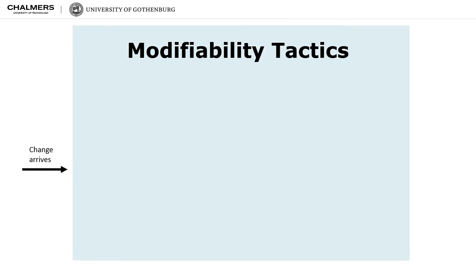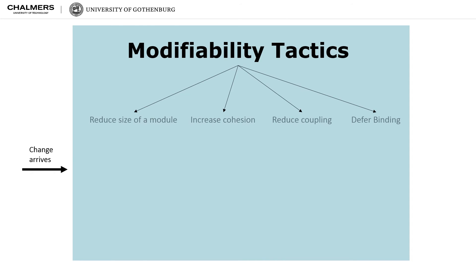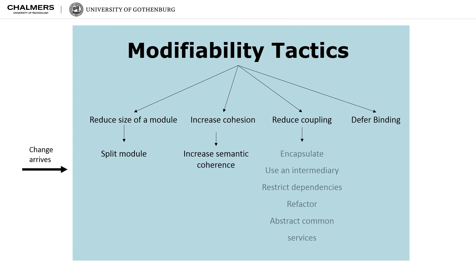In order to make an architecture more modifiable, an architect is equipped with a rich set of modifiability tactics to select from, realized in the architectural design at hand. Four major categories of modifiability tactics can be identified.